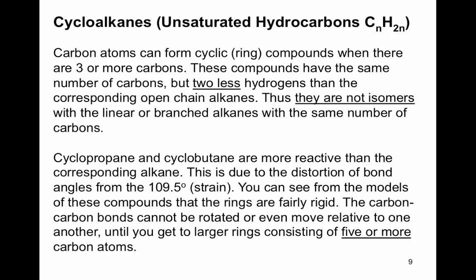Cyclopropane and cyclobutane are more reactive than the corresponding alkane due to distortion of bond angles from 109.5°. In cyclopropane, the C-C-C bond angle is only 60°; in cyclobutane it's 90° — both are far from the ideal 109.5°, creating angle strain. The carbon-carbon bonds in these small rings cannot rotate relative to one another until you get to larger rings of five or more carbons.